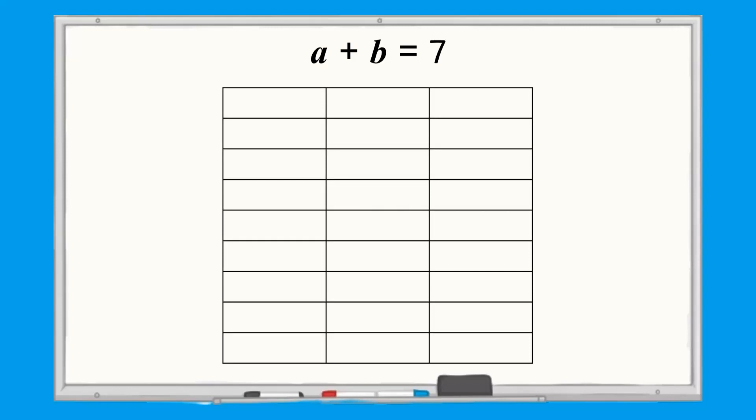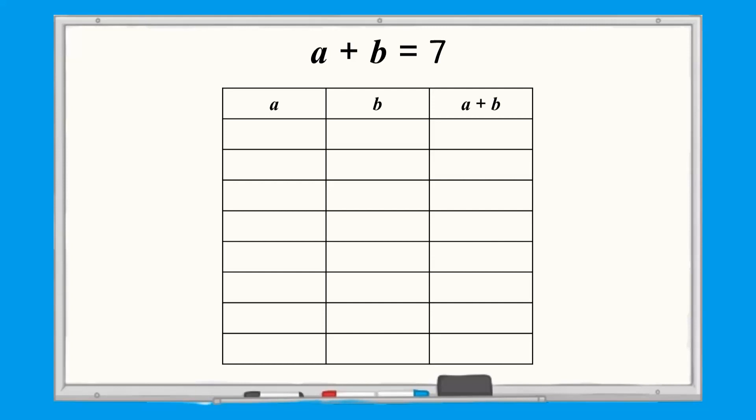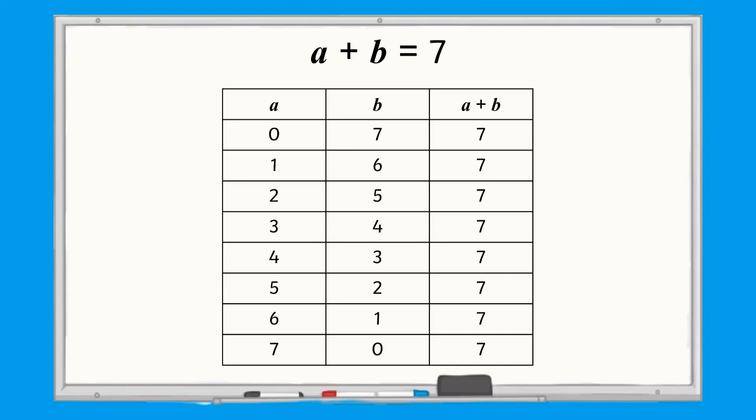We can put in values for a and then work out what the corresponding value for b would be. If a is equal to 0 and a add b equals 7, then b must equal 7. If a is equal to 1 and a add b equals 7, then b must equal 6. We can keep going in this way until we have all the possibilities.